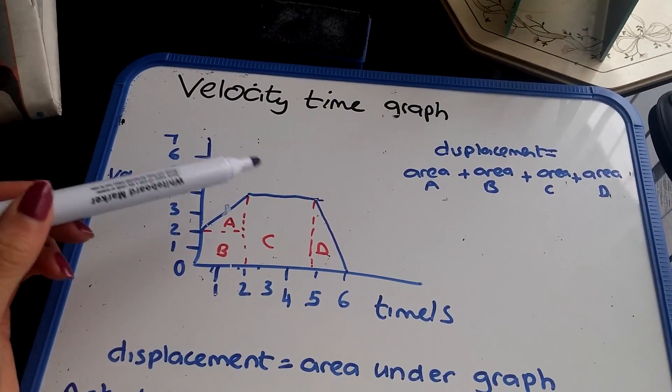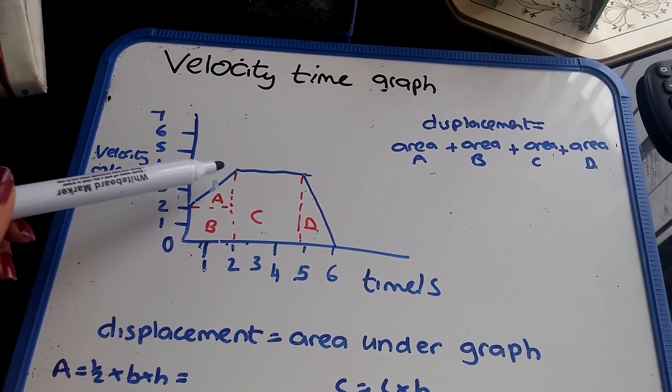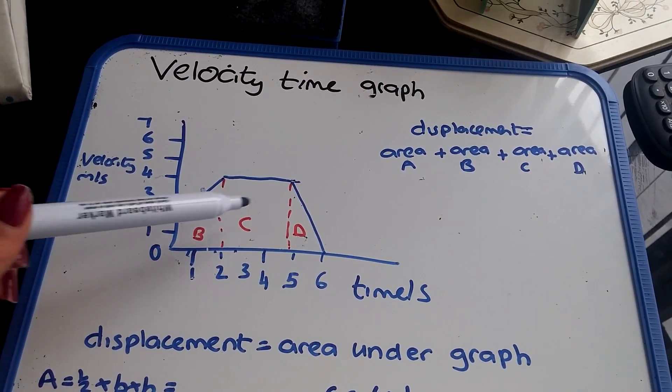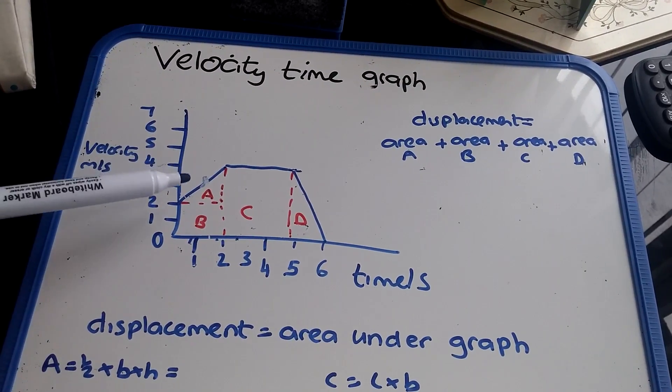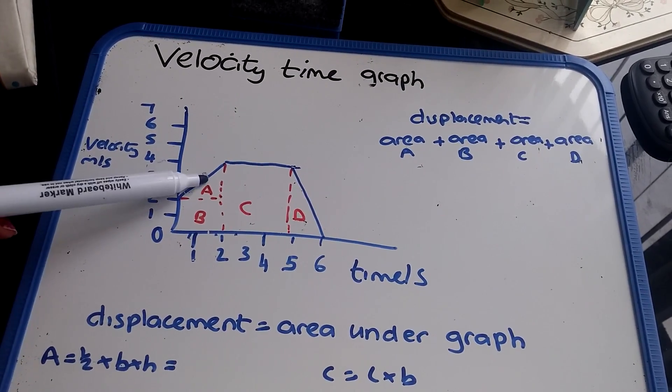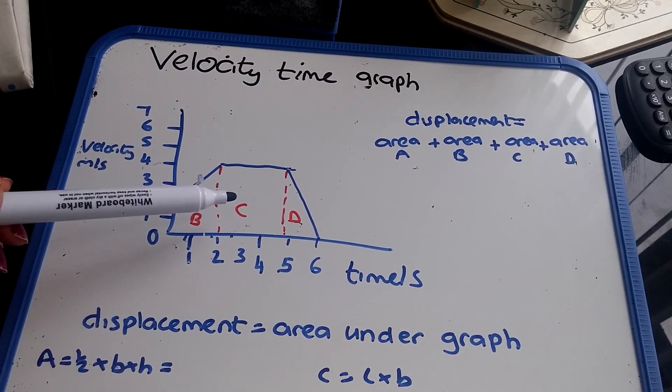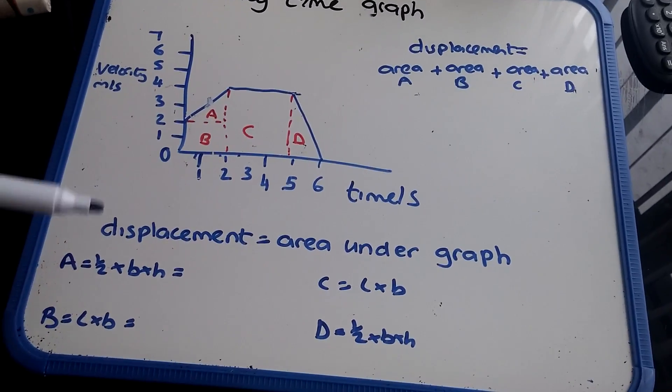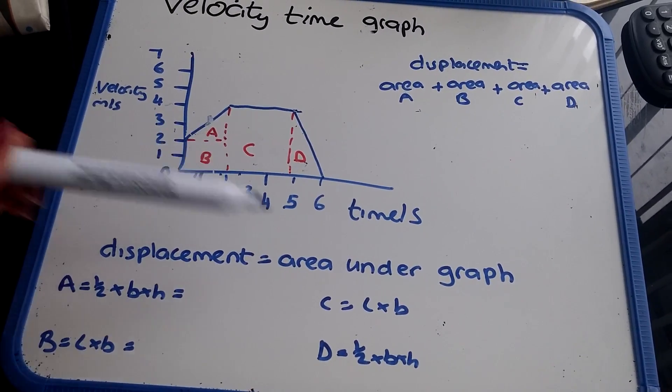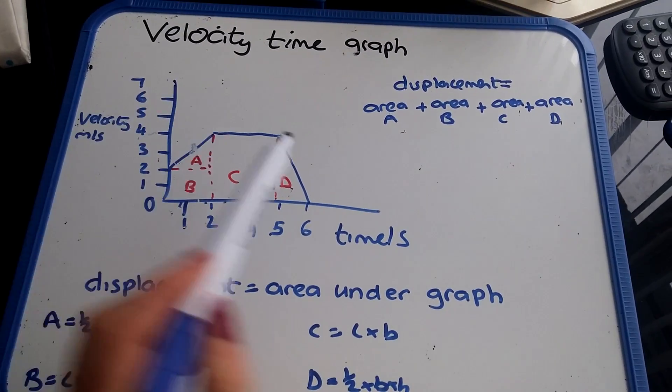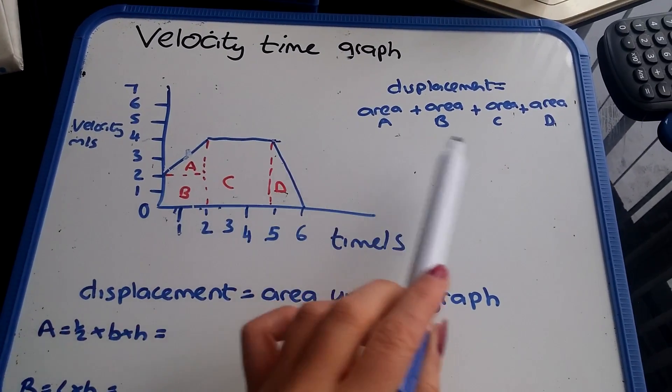So what we've done is the blue line is the graph, and I've used the red pen to divide it into different shapes. A is a triangle, B is a square, C is a rectangle, D is another triangle. If I find the area of all these individual shapes, then my total displacement is the area of all these shapes added together.